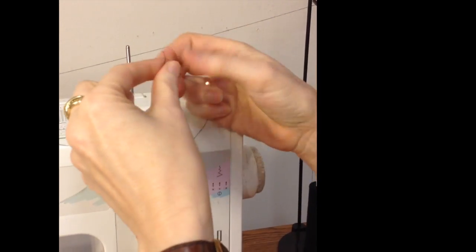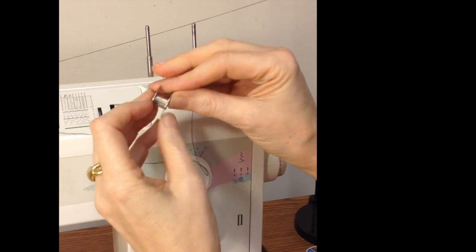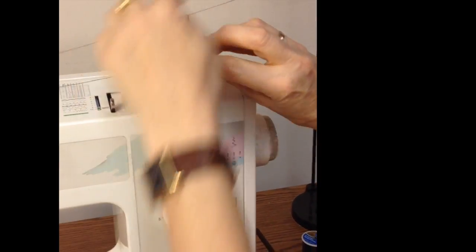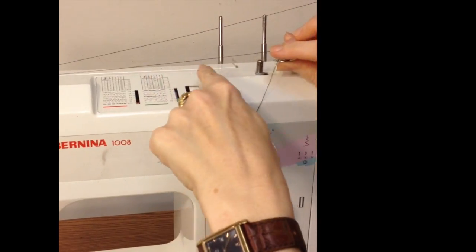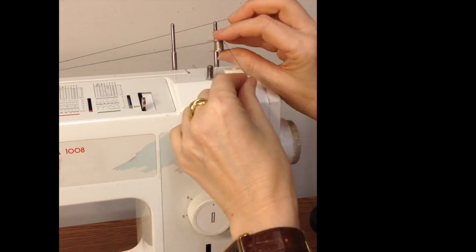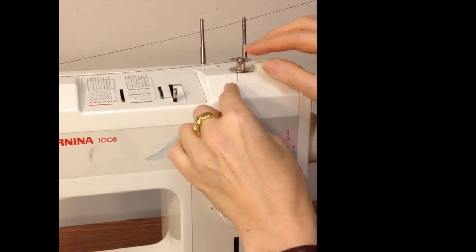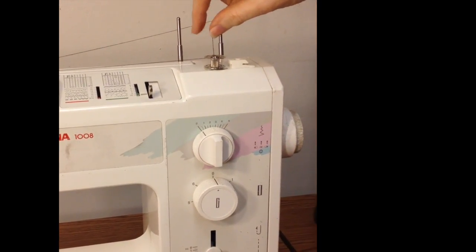Before we put the bobbin on the bobbin winder, we want to put the thread through one of those side holes so that the thread that is coming off of the cone through the guide, through the tension, onto the bobbin comes onto that center part. This thread will hold up here in a minute.